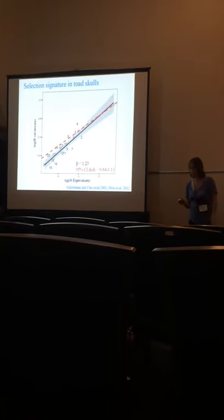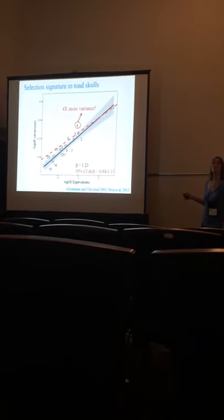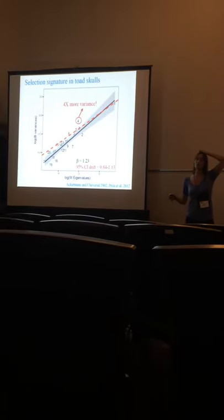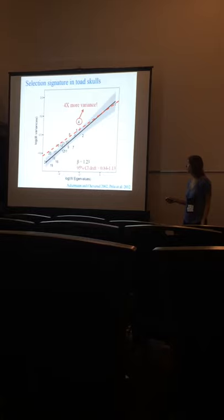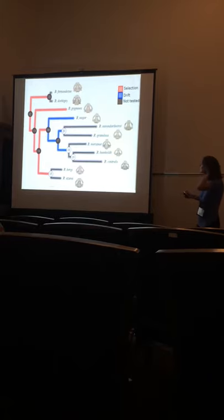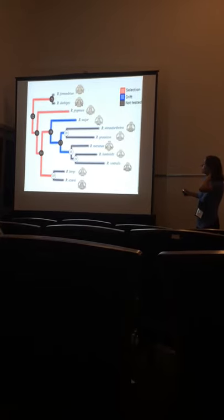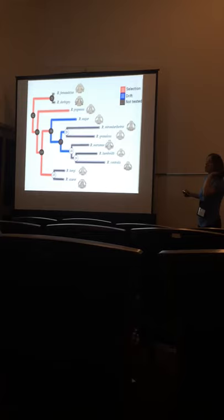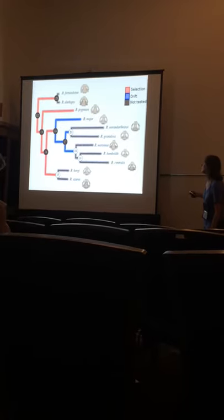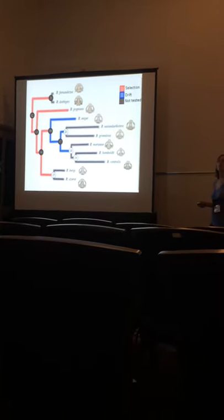I'm rejecting the drift hypothesis for the most basal node. What really caught my attention is PC4, a specific morphological dimension that has four times more variance than expected under drift — a strong signal of selection on this dimension. I performed this test across the phylogeny for nodes in black: drift is rejected in the three most basal nodes. In two nodes I could not reject drift — so it could be drift or other forces. White nodes were not tested due to insufficient species sample size.